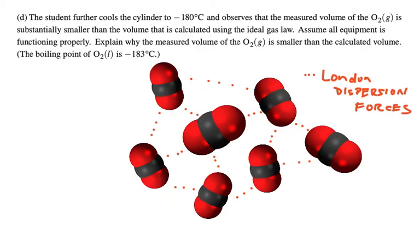And the last part, the student further cools the cylinders to negative 180 degrees Celsius and observes that the measured volume of oxygen is substantially smaller than the volume that is calculated using the ideal gas law. Assume all equipment is functioning properly. Explain why the measured volume of oxygen is smaller than the calculated volume.